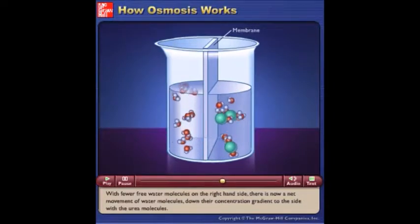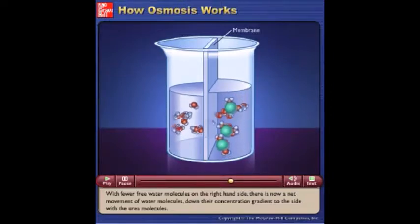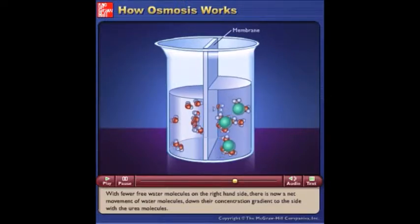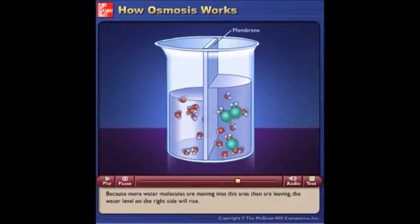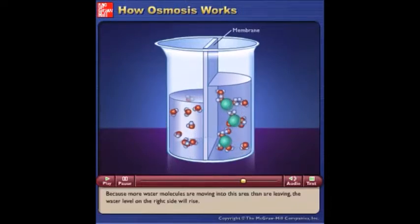With fewer free water molecules on the right-hand side, there is now a net movement of water molecules down their concentration gradient to the side with the urea molecules. Because more water molecules are moving into this area than are leaving, the water level on the right side will rise.